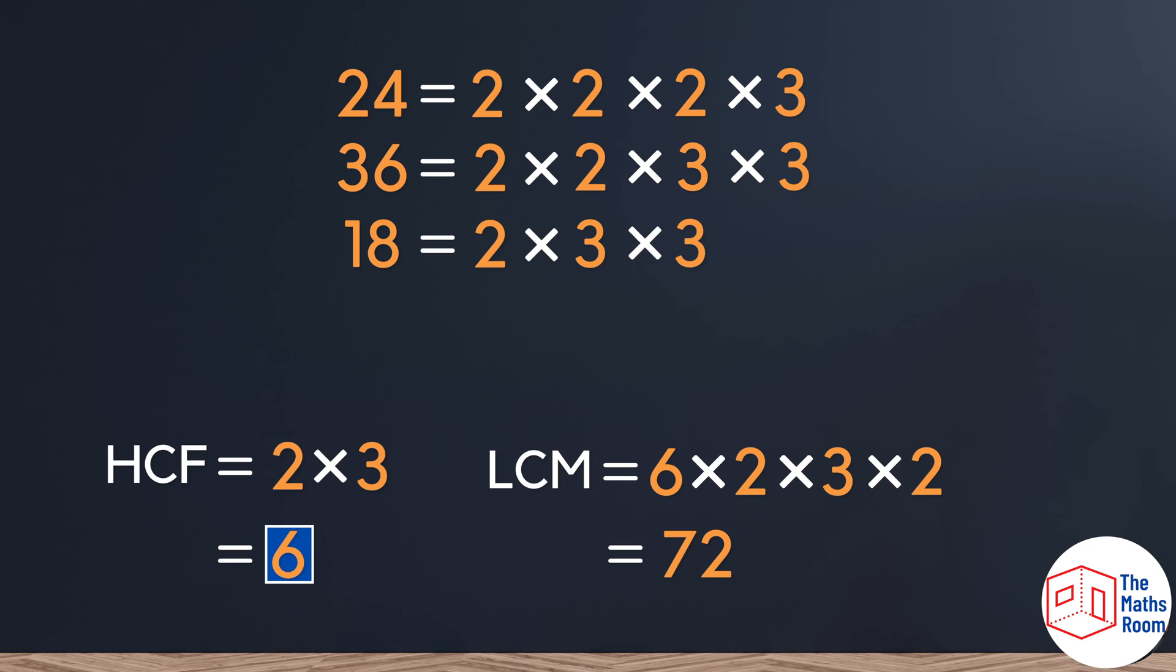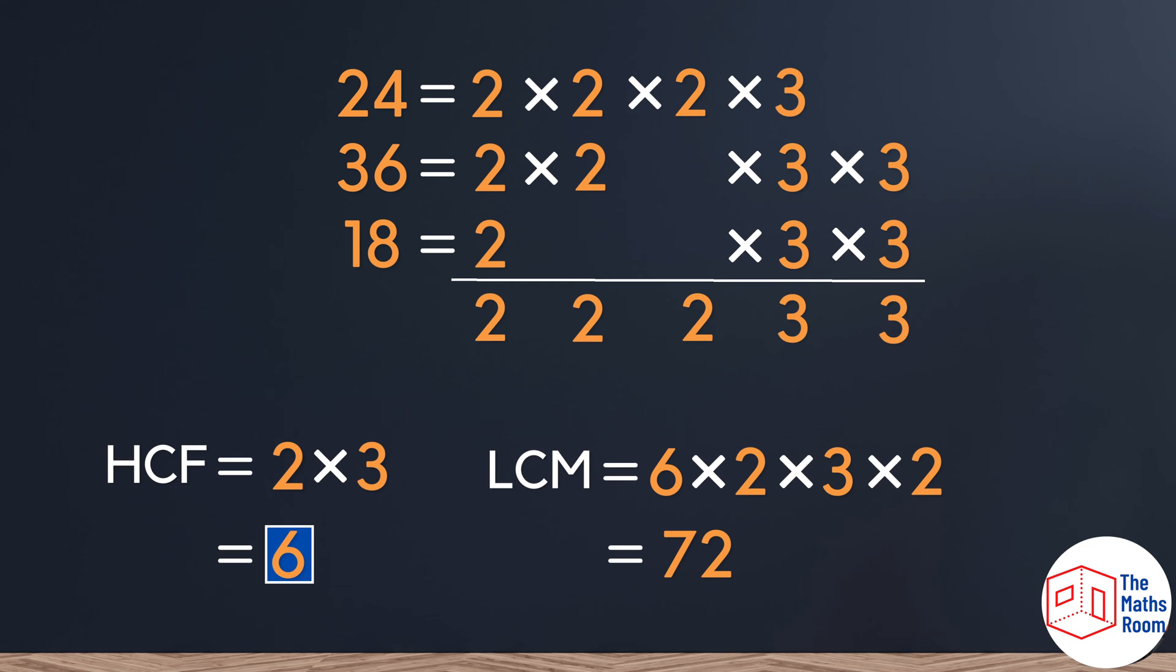If we lay out our numbers slightly differently so that only the repeated numbers are in columns above each other, we can see that we'll just multiply one of each and we will still see that we get the lowest common multiple of 72. And then this method just skips finding the highest common factor first because that is done within that calculation.